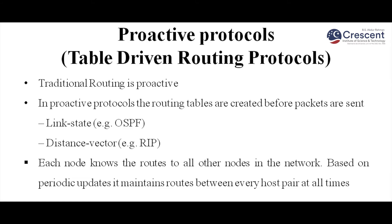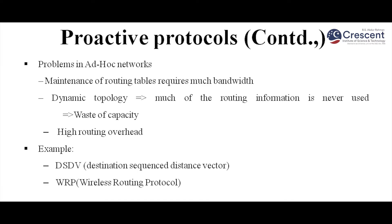Proactive routing protocols are also called table-driven routing protocols. Traditional routing — LSR (link state routing) as well as DVR (distance vector routing) — follow proactive protocols. Before data is sent to a particular destination, we need to create the routing table. Each node knows the route to all other nodes in the network, and based on periodic updates, it maintains the route between every host pair at all times. The main problem in ad hoc proactive routing is bandwidth constraint.